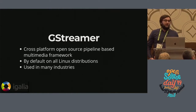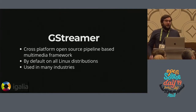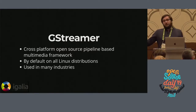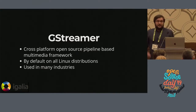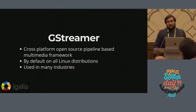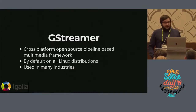GStreamer is a cross-platform, open source multimedia framework, so you can deal with audio and video for anything you want. It basically wraps up the APIs — like decoders, encoders, et cetera — and you can deal with it through a standardized API on top of all that. It's installed on all Linux distributions by default, and it's used in many industries such as TVs, set-top boxes, rendering farms, and things like that.